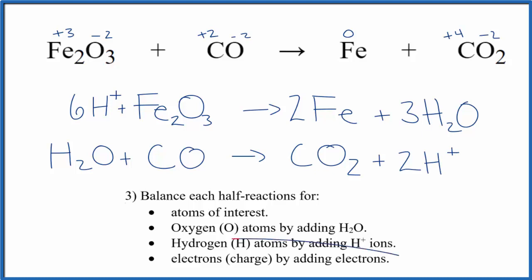The last bit is balancing the charge by adding electrons. 6 plus here, let's add 6 electrons. So now the charge is balanced. 2 plus, we add 2 electrons here. Charge is balanced. So this is the ion-electron method for balancing redox reactions, also called the half-reaction method because we're dealing with electrons and ions here.